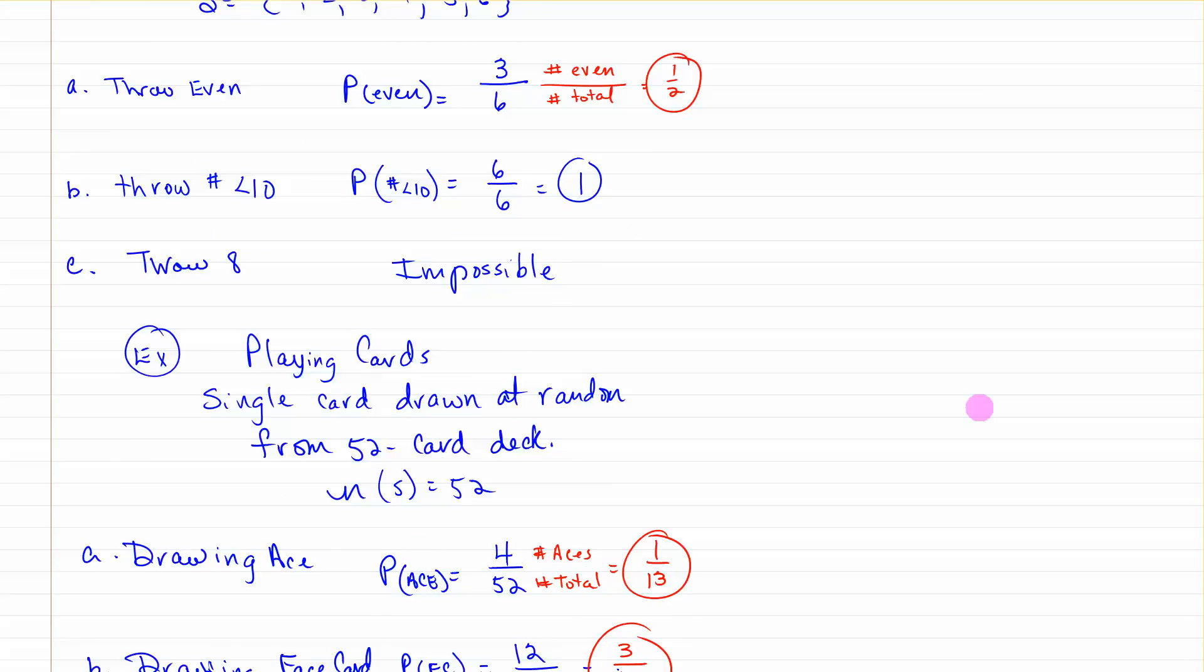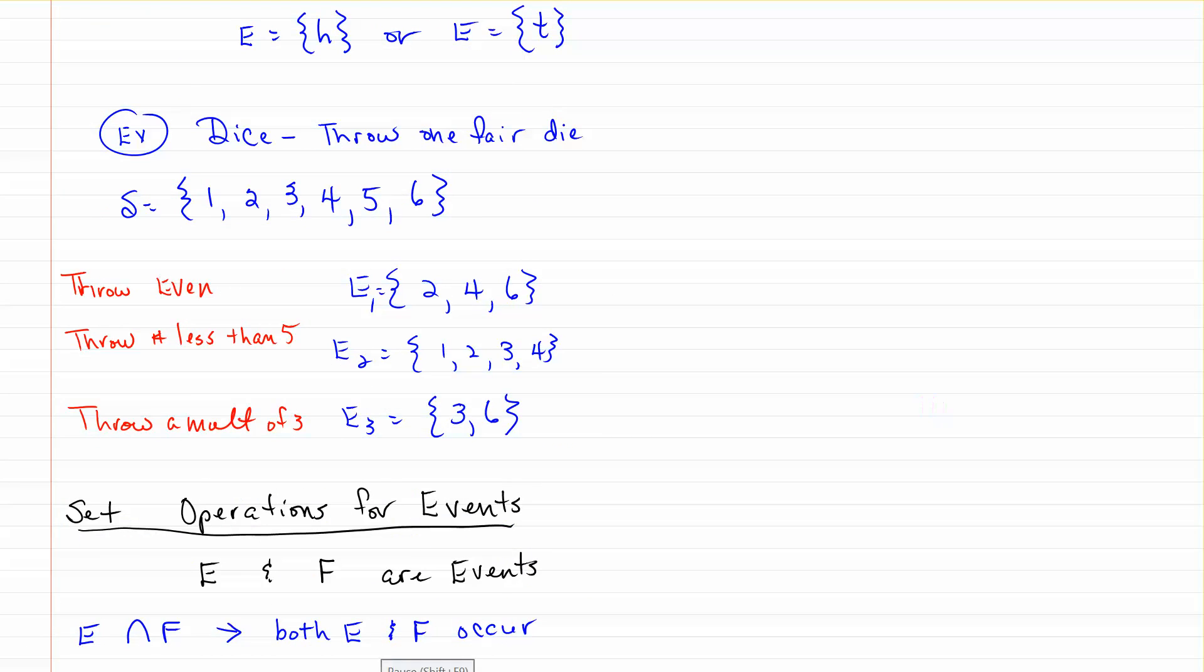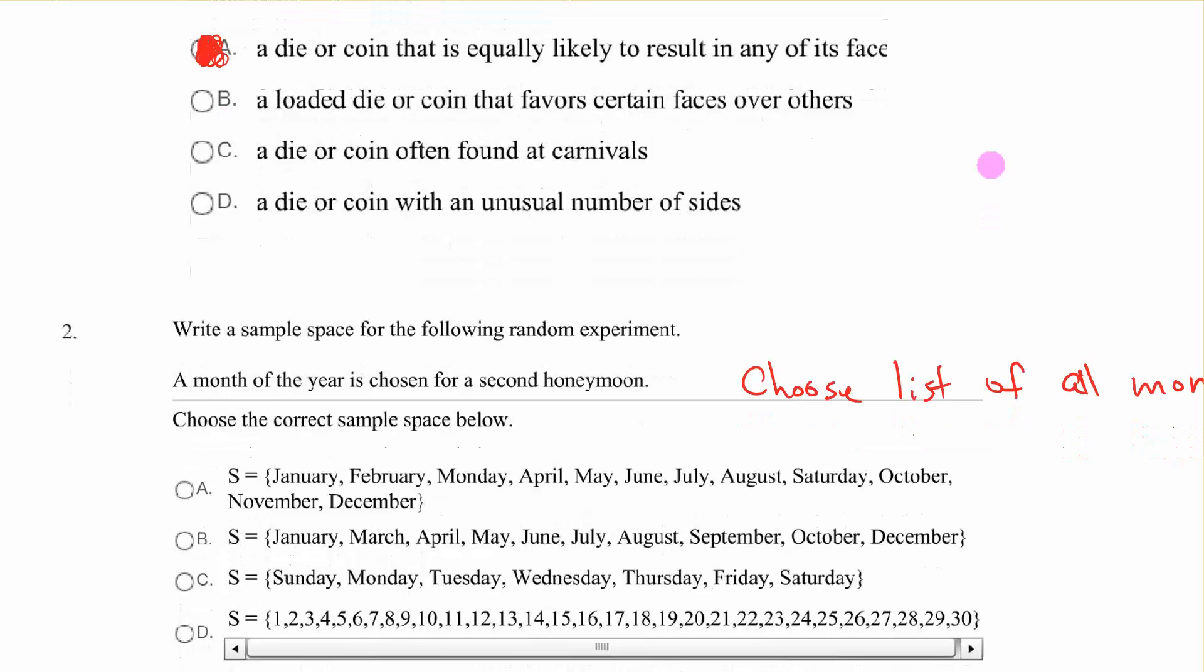I think that has us ready for the problems. Let's go to the problems. Number 1 is a question about vocabulary. What's meant by a fair coin or die? That means it's not loaded, and you're as likely to draw a particular card or throw a coin or a die as you are any of the others. So a die or coin that's equally likely to result in any of its faces is a fair one.